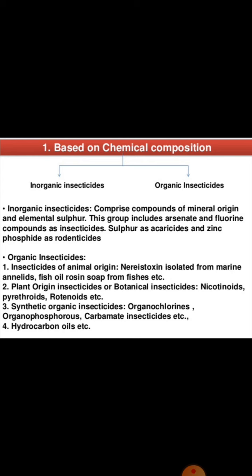On the basis of chemical composition, insecticides are inorganic and organic. Inorganic insecticides contain minerals — such as mineral oils like sulfur. Organic insecticides contain carbon. Inorganic insecticides comprise compounds of mineral origin and elemental substances; this group includes arsenates, fluorine compounds, sulfur as acaricides, and zinc phosphide as rodenticides.